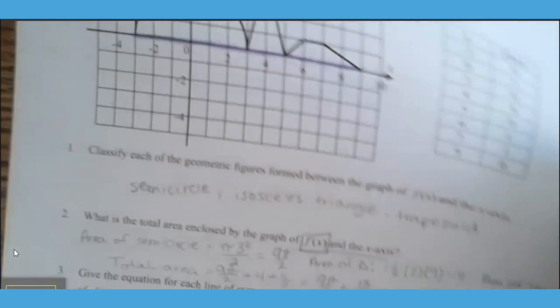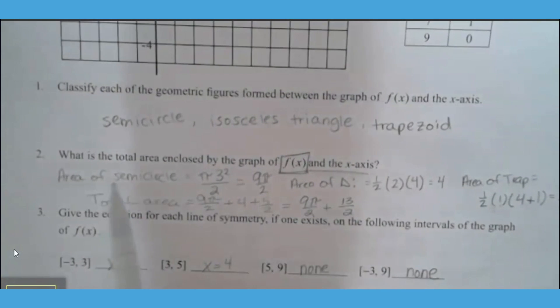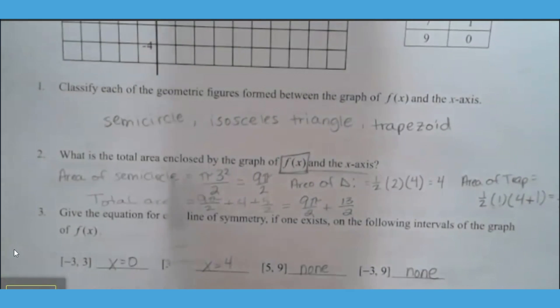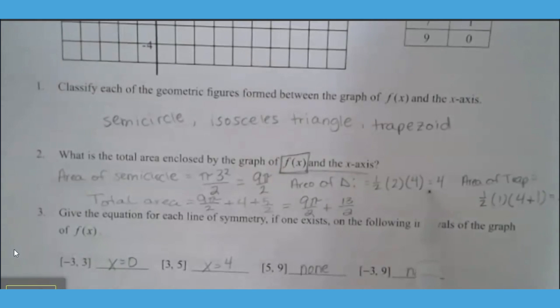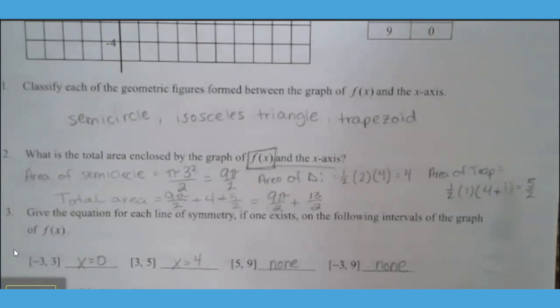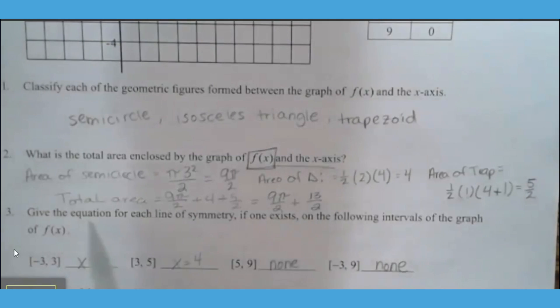I like to ask my students to separate those so that they are finding the area of the semicircle, 9 pi over 2, the area of the triangle, 4, and the area of the trapezoid, 5 halves. To find that total area, we will add those all together.